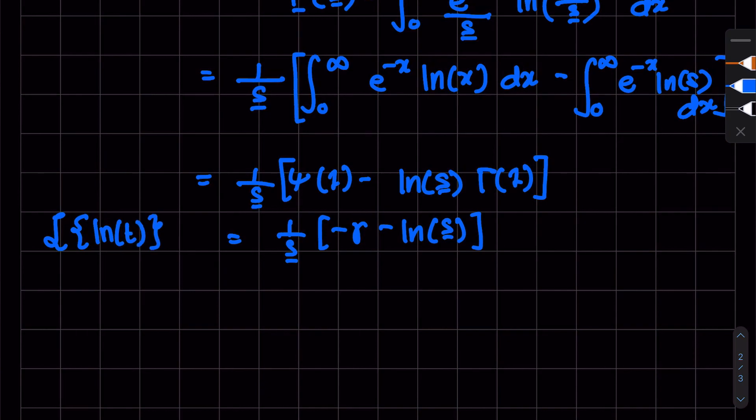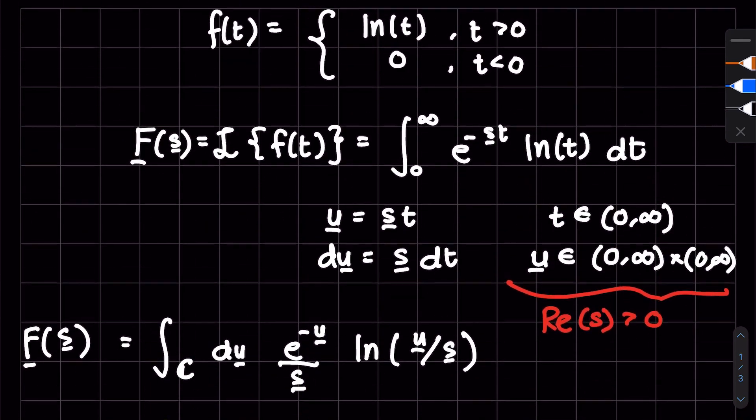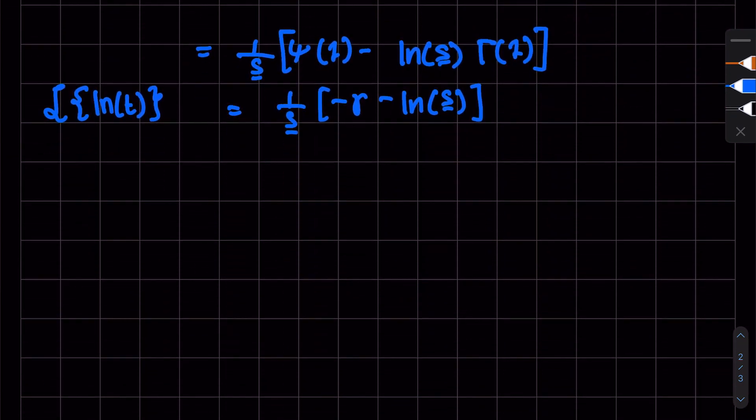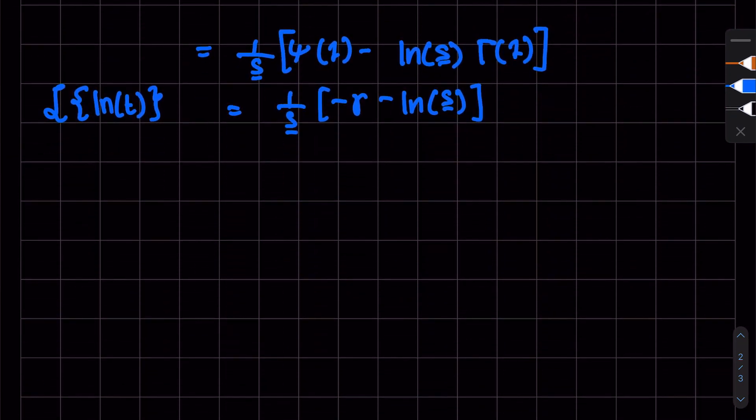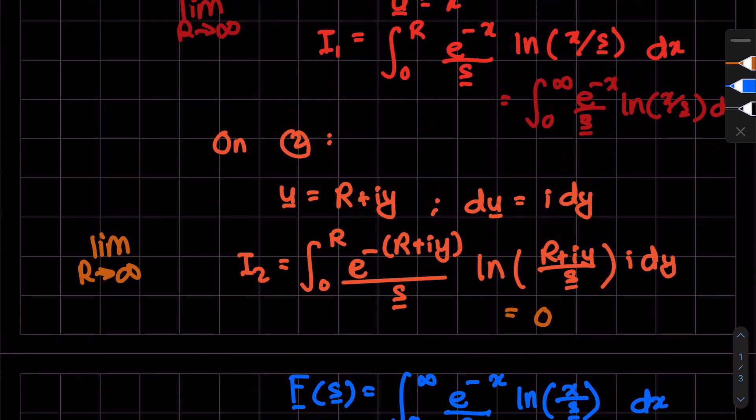And that is the Laplace transform of natural log of t. Well, zero is obviously going to be zero. So if you want to write it in a piecewise form, it's going to be this and then zero, with the region of convergence real part of s greater than zero. Of course, this was the answer; this was the assumption at the start.